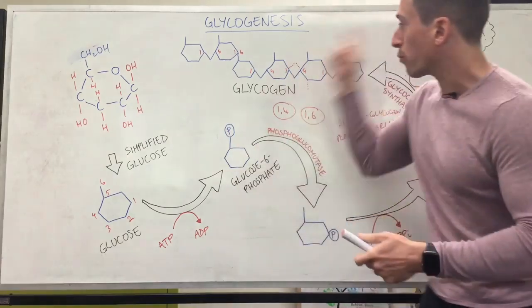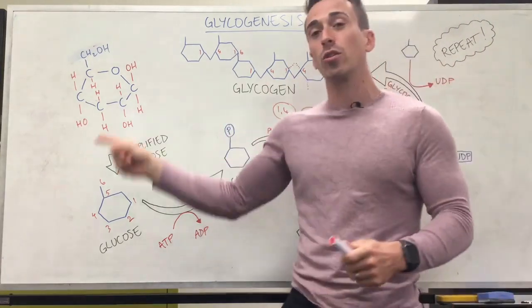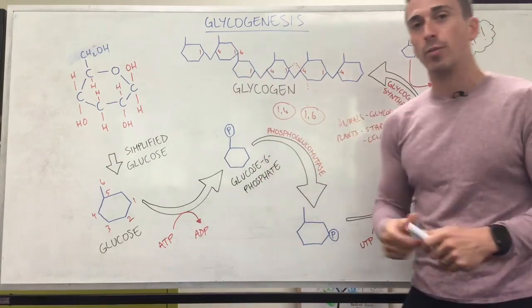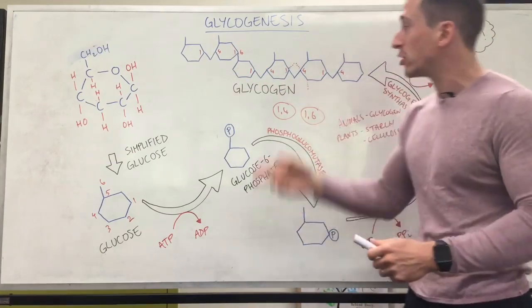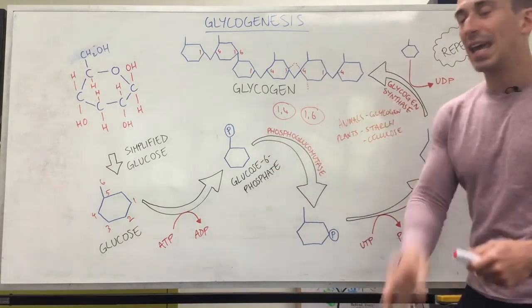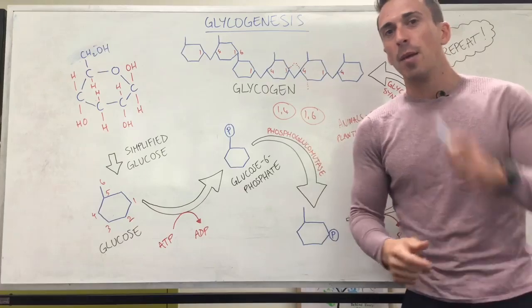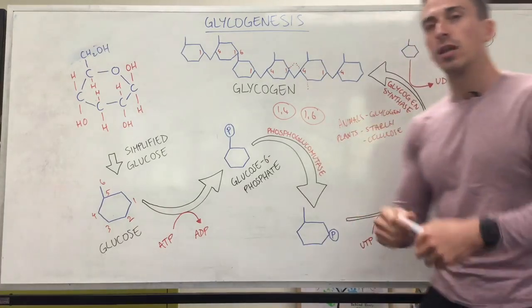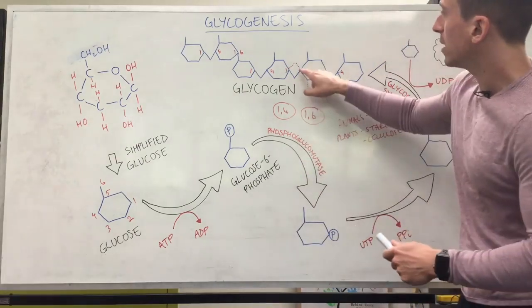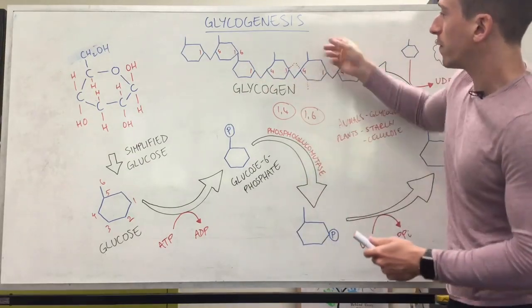And this is important because the enzyme that we use when we are now in a fasting state, a post-absorptive state, and we need to break this glycogen down back into glucose to use for energy, we need to chop these one to four bonds and one to six bonds. And we use an enzyme called amylase to do this. So when we have glycogen or starch, we can easily chop it up with this amylase. But if we're ingesting cellulose, certain plant material, we don't actually have the enzymes to break these every second bonds where it's flipped upside down.